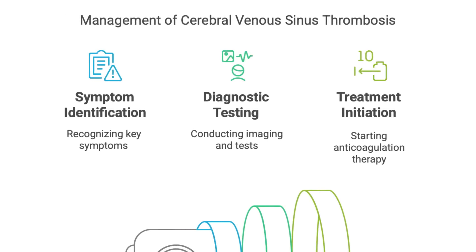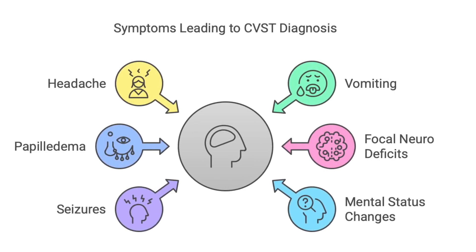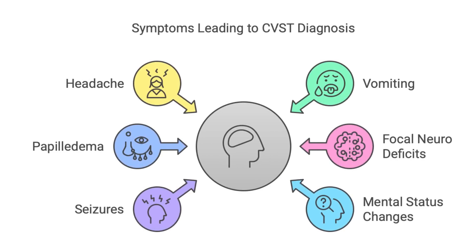The last serious condition is headaches from cerebral venous sinus thrombosis — a blood clot in one of the venous sinuses in your brain, which are responsible for draining blood away from the brain. The headache can start gradually or come on really suddenly. Other symptoms include vomiting, papilledema, focal neurological deficits like weakness on one side of the body or trouble speaking, seizures, and sudden mental status changes.